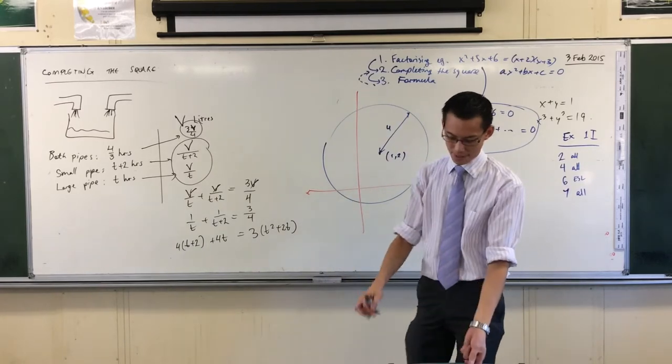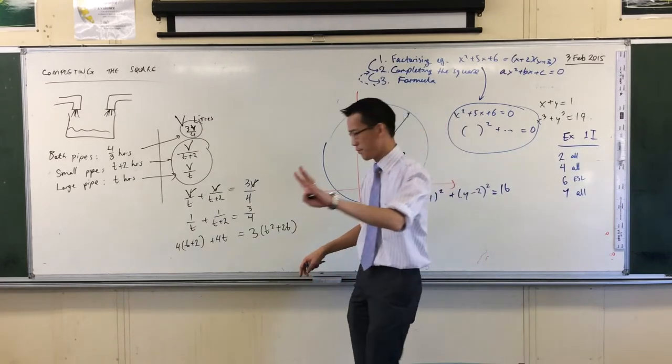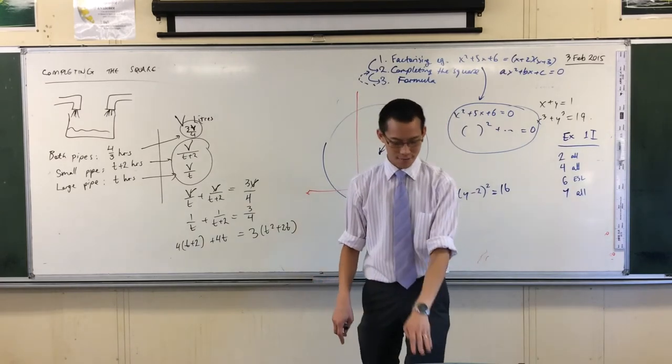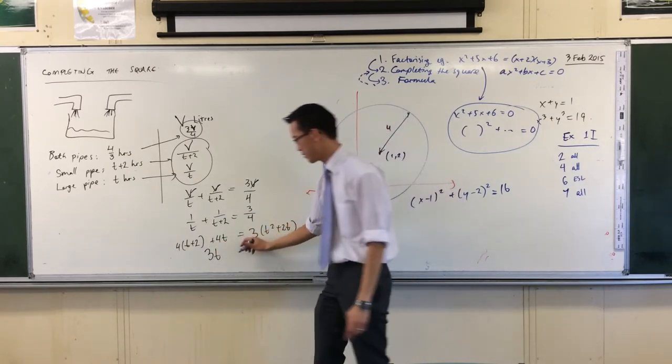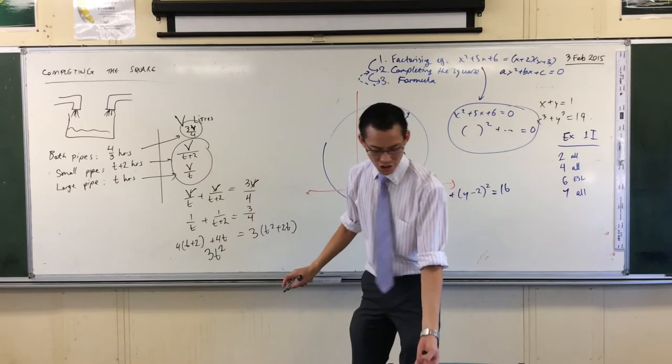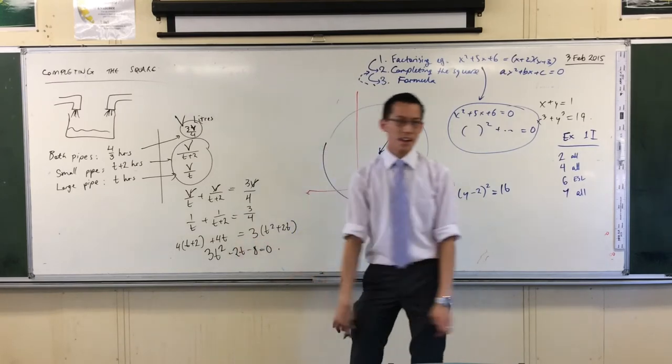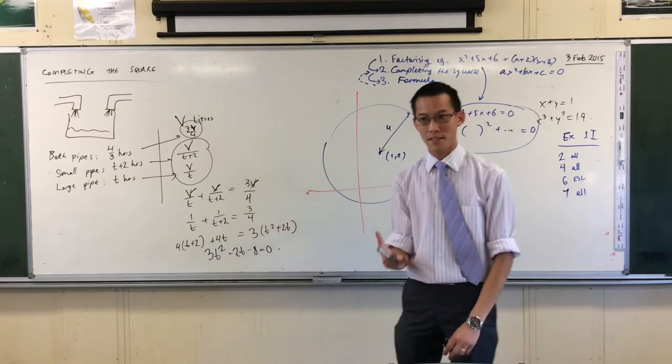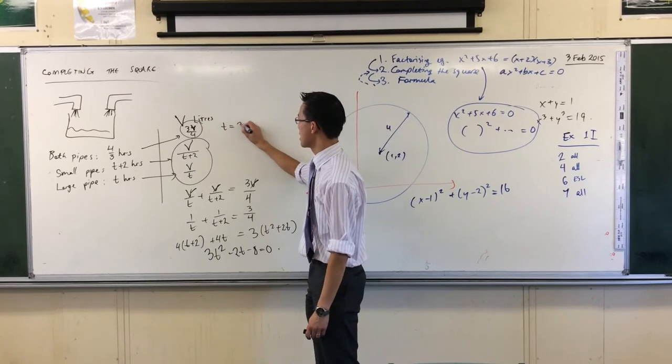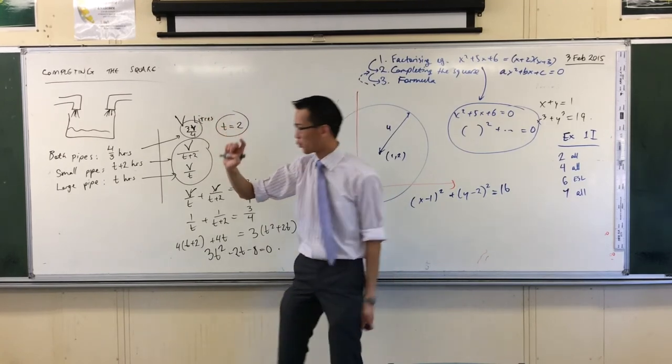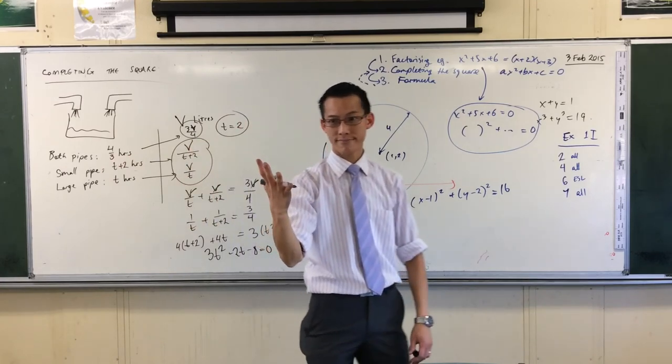From there what's going to happen? You're going to get a quadratic of some kind. If I've got it written down correctly you should simplify out, there's going to be a 3T squared there. You're going to end up with this. And when you go and pull out the formula on that, one of your solutions will be negative and the other one will be T equals 2. So one pipe will take 2 hours and the other will take 4.